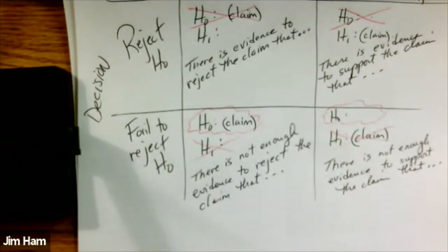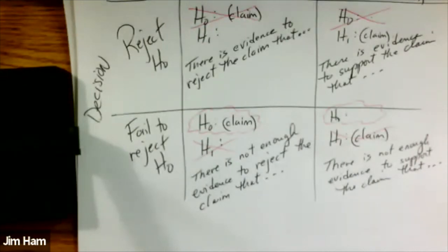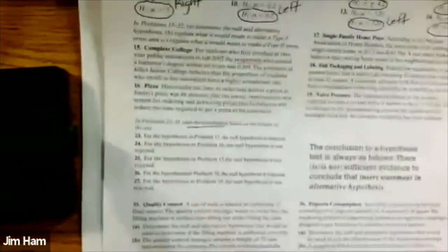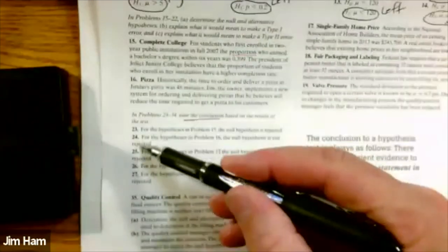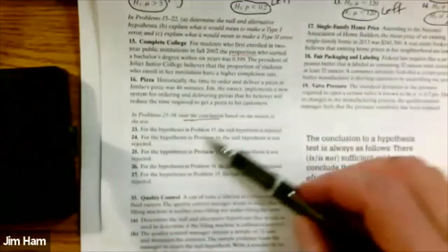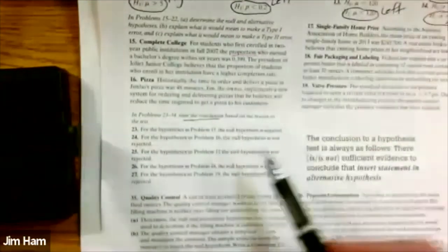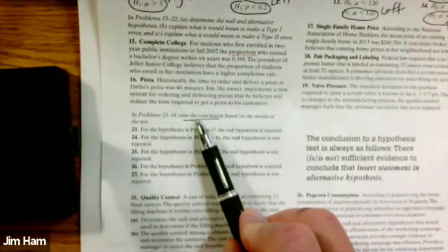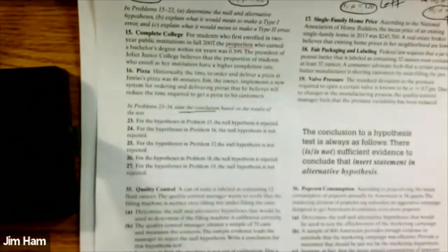We are out of time, so I'll include a couple of interpretation examples in the notes. Problems 23, 24, and 25 all refer to problems stated earlier and ask you to state the conclusion — so I'll include a couple of these in the notes.